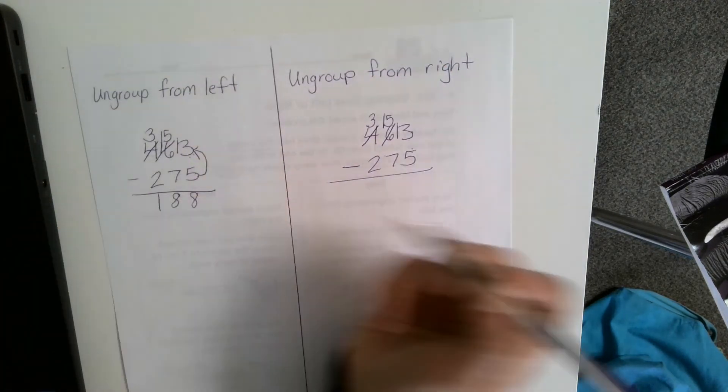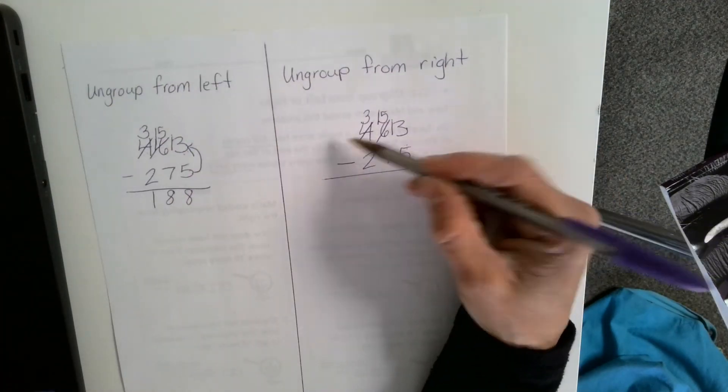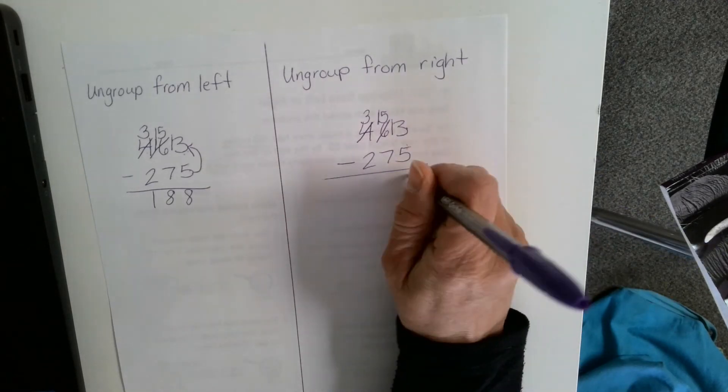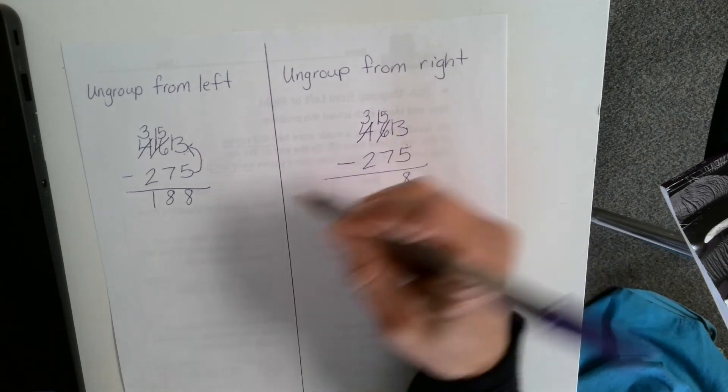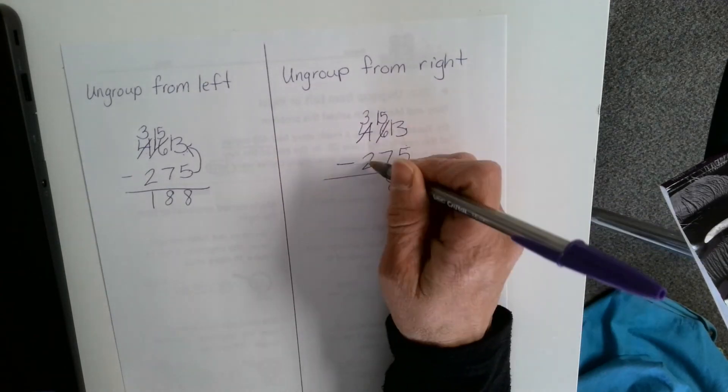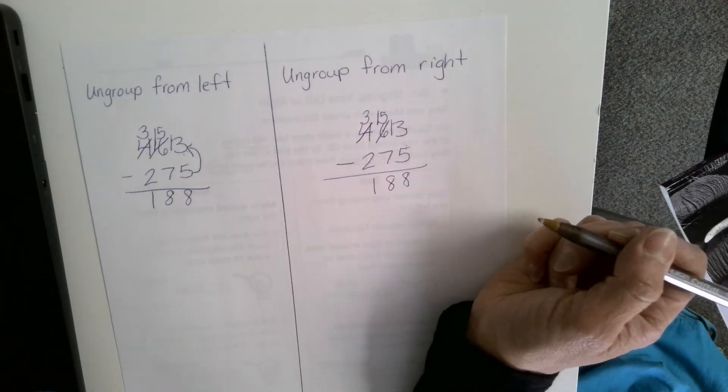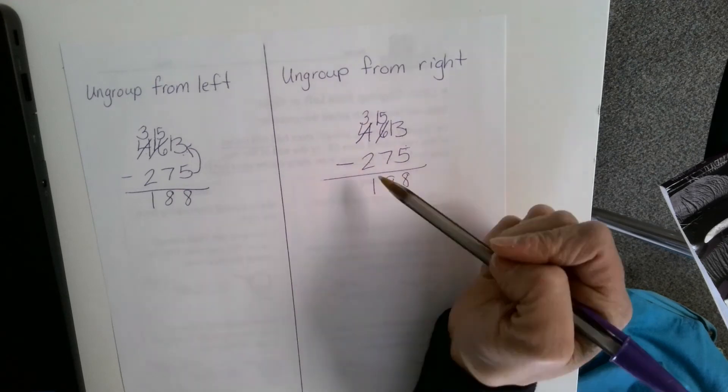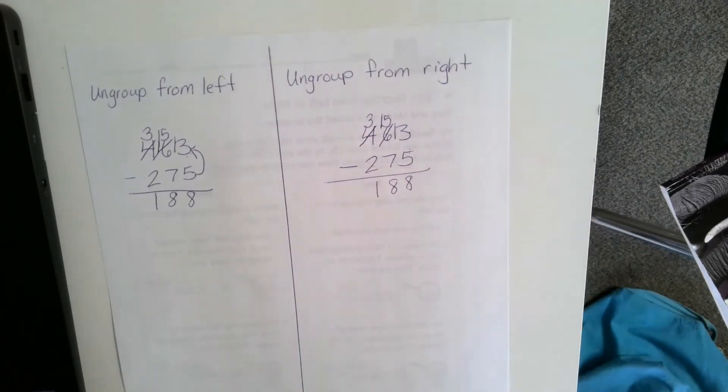Now this time I'm going to go from right to left. 13 minus 5, I just did that, I know it's 8. 15 minus 7, I just did that, I know it's 8. And 3 minus 2 is 1. So either way you ungroup, you're going to get the same answer if you do it correctly.